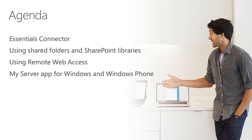Just a quick look at the agenda. We'll start out by talking about the Essentials Connector, a new program that is a starting-off point for some of the tools you may be familiar with from previous versions. We'll also look at using shared folders and SharePoint libraries, which is a new aspect of the optional Office 365 integration. We'll look at remote web access, the web portal we've had in previous versions, and finally the My Server app for both Windows client and Windows Phone.